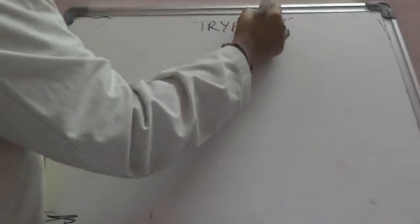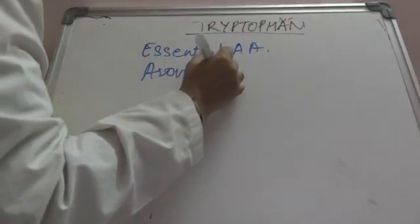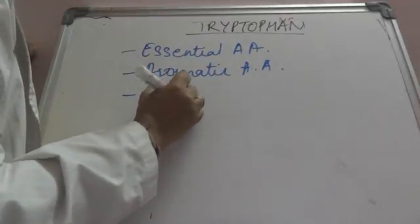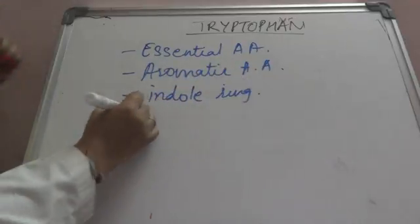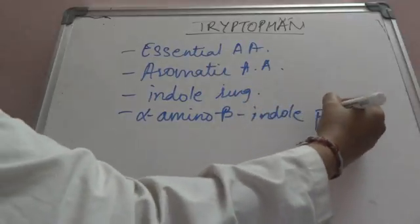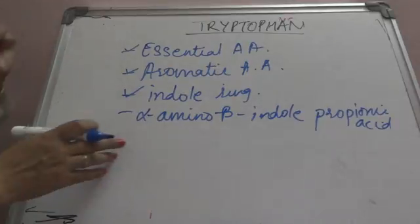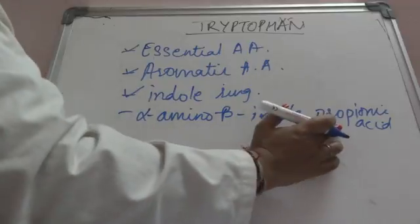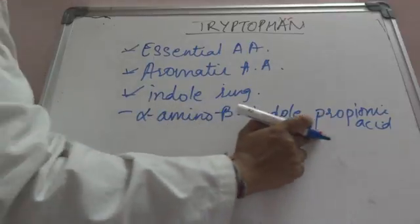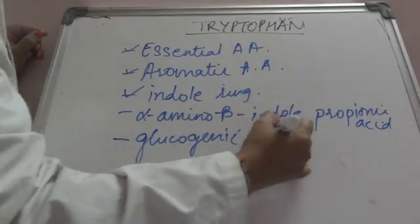Today we discuss tryptophan metabolism. Tryptophan is an aromatic amino acid and an essential amino acid. It contains an indole ring, and chemically it is known as alpha-amino beta-indole propionic acid. The key points to remember are: it is an essential amino acid, an aromatic amino acid, contains an indole ring, and the chemical name reflects a propionic acid backbone with an indole ring and an amino group.